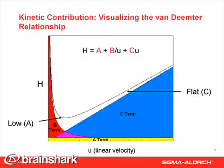The A term is this yellow portion that influences the minimum attainable H. The primary contributors to the A term are how well packed the column is and the particle size distribution. And both of these are exactly what our jobs are about.